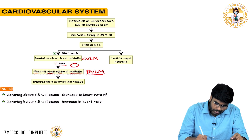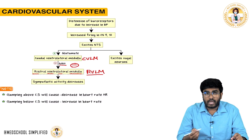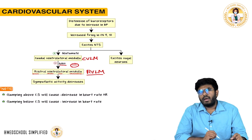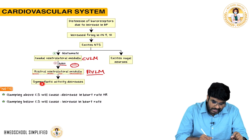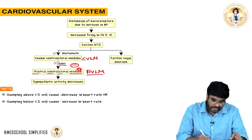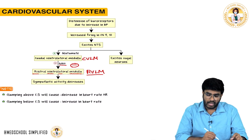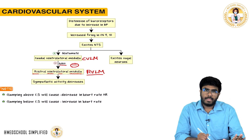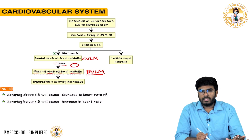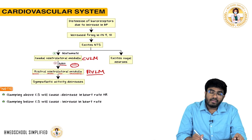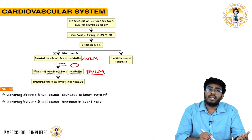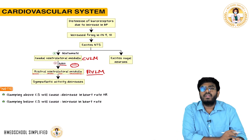The CVLM inhibits the RVLM using GABA. The RVLM is the primary sympathetic center, so when it is inhibited, sympathetic firing decreases, heart rate decreases, and vasodilation occurs. Additionally, the nucleus of tractus solitarius excites vagal neurons — the vagus is a parasympathetic nerve — so when vagus is activated, heart rate further decreases. This is how the baroreceptor reflex works.